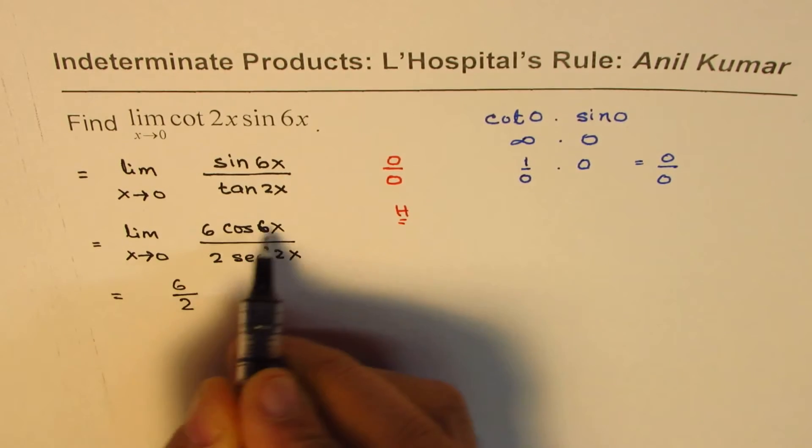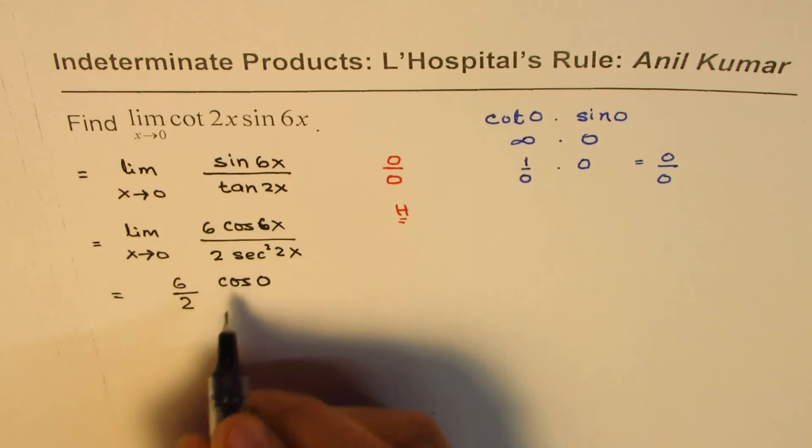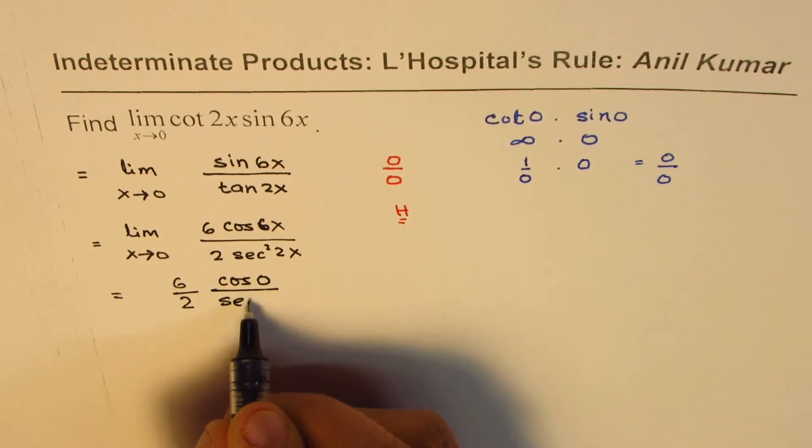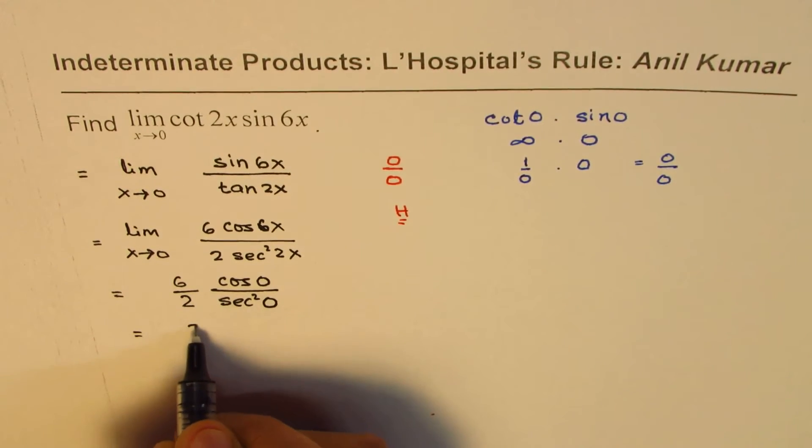And when I substitute 0 here, I get cos of 6 times 0, divided by secant square 0. Now that gives us 6 divided by 2 is 3.